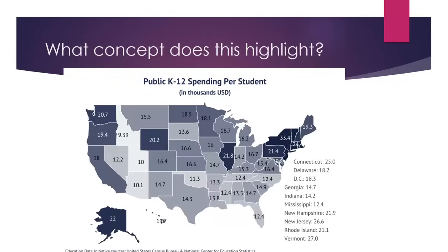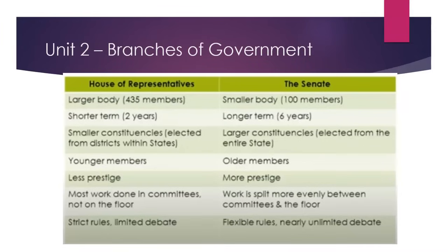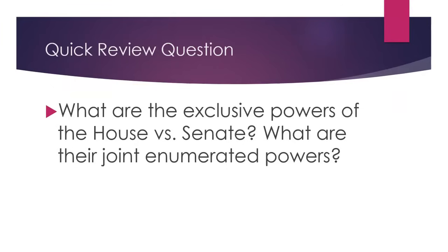Take a moment to pause — what concept does this highlight? And if you said federalism, you are correct, because states basically get to decide how much they want to spend on education. That is the state power, thanks to the Tenth Amendment and federalism. Now, when we talk about the branches of government, we have the House and we have the Senate. The House is much more in touch with the people — there's more of them, they serve shorter terms — whereas the Senate represents the entire state, made up of about 100 members, so there are fewer rules and more flexibility compared to 435 people in the House.